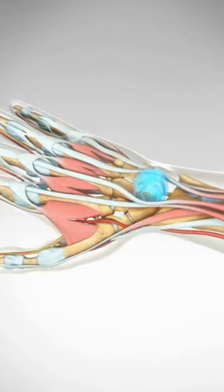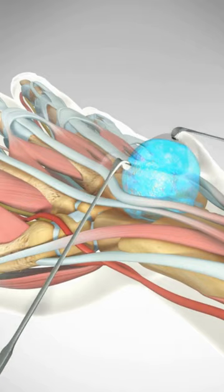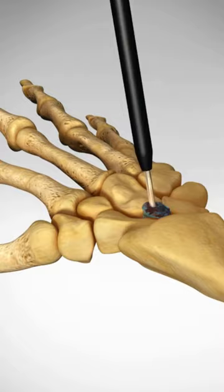Most symptomatic cysts occurring on the back of the wrist are removed. Through a transverse incision centered over the cyst, the duct feeding the cyst can be cauterized in order to prevent cyst recurrence.